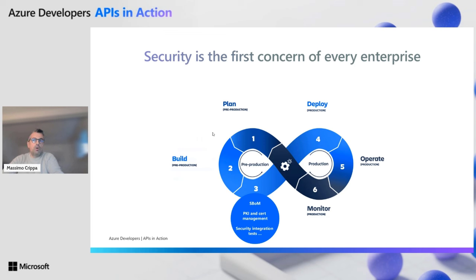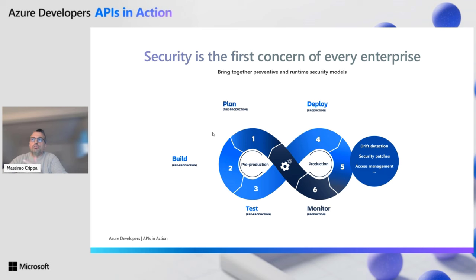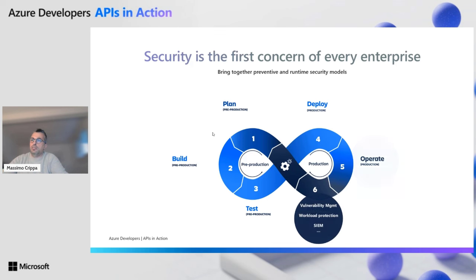Then we move on with testing and deploying our workload in development, acceptance, and so on. There we can start using OWASP ZAP, for example, to test the security of a workload or application that has been deployed. Then we move on to production, where we need to operate and monitor our workload — for example, which security patches we have to apply, access management, and so on. And then we end up with workload protection at the end of this post-production security focus.